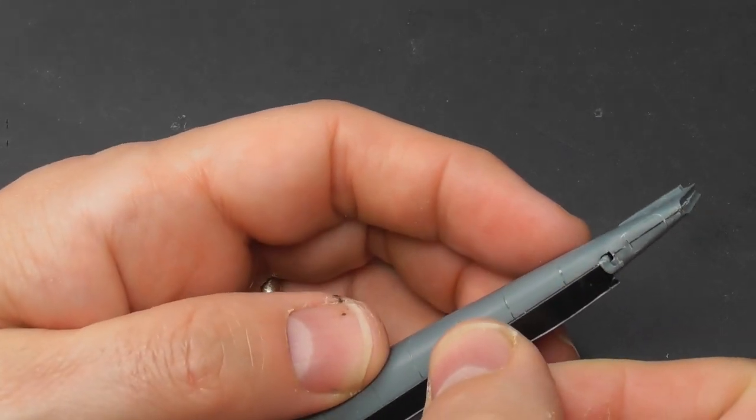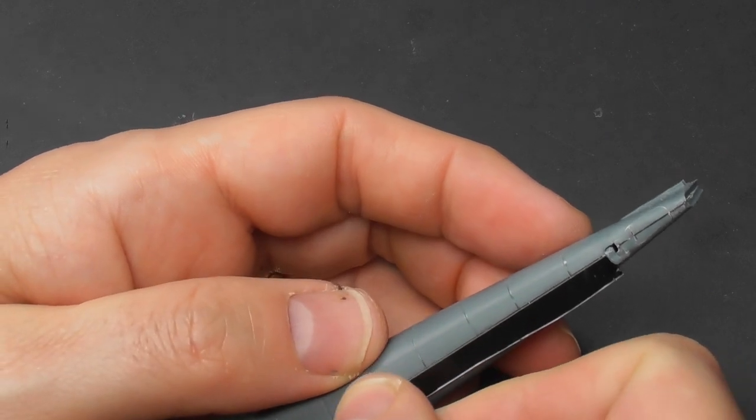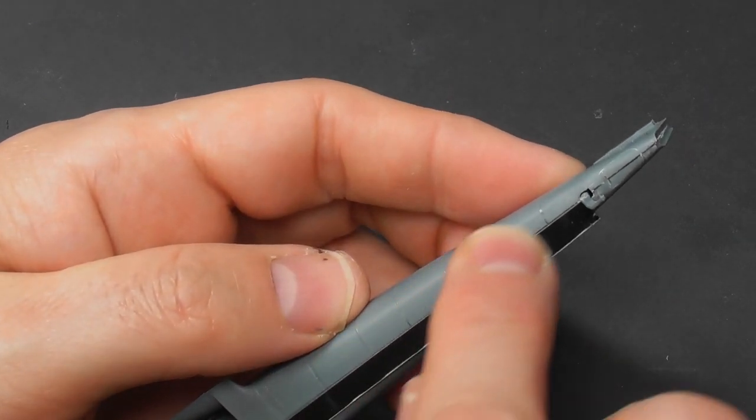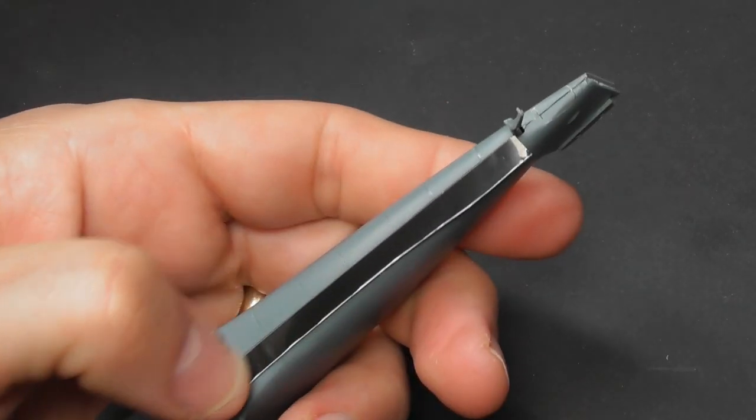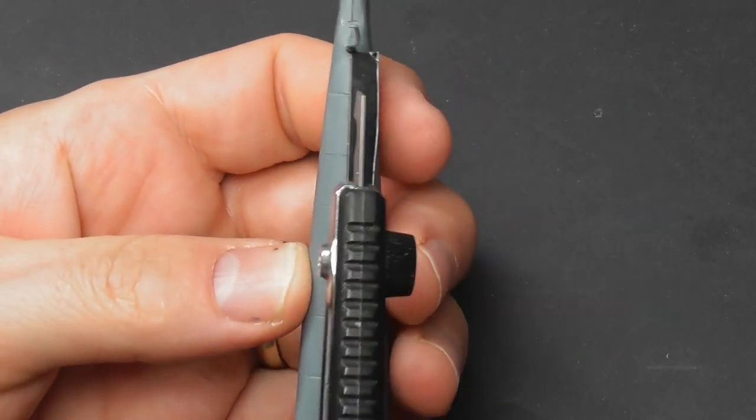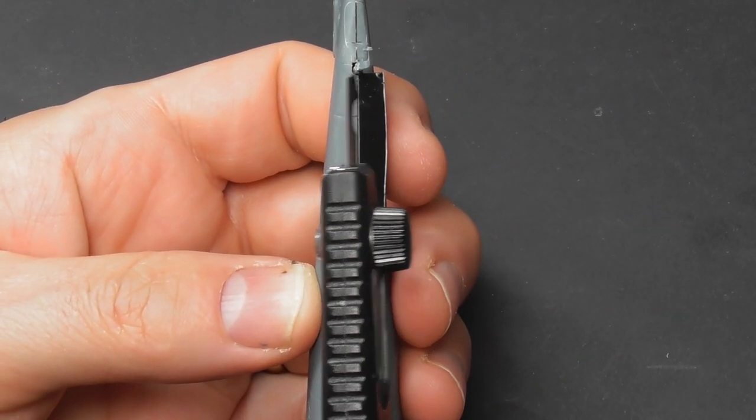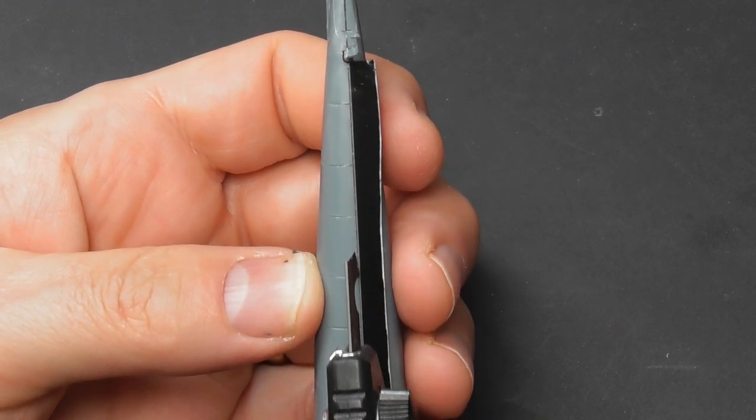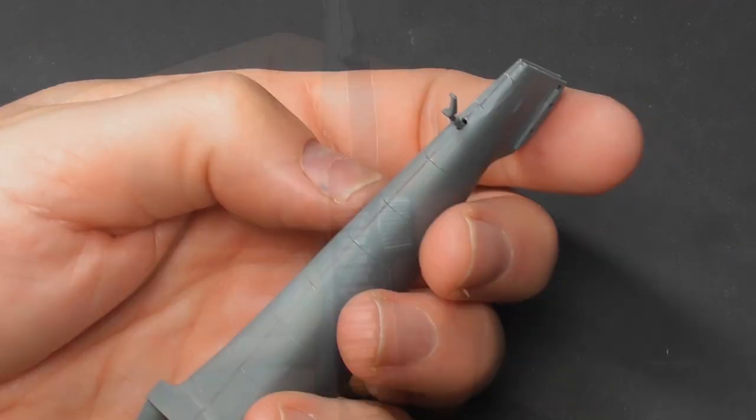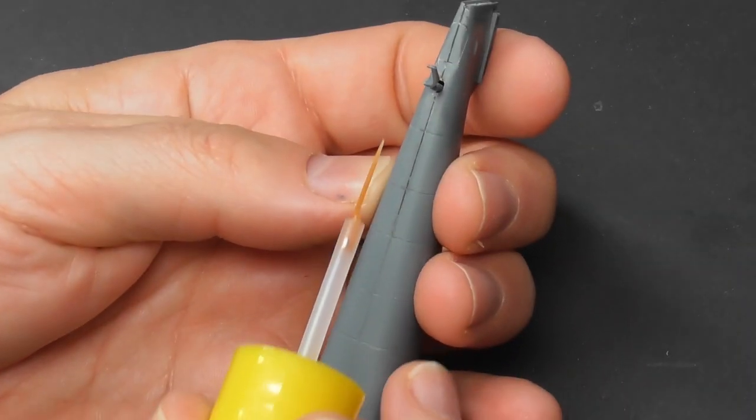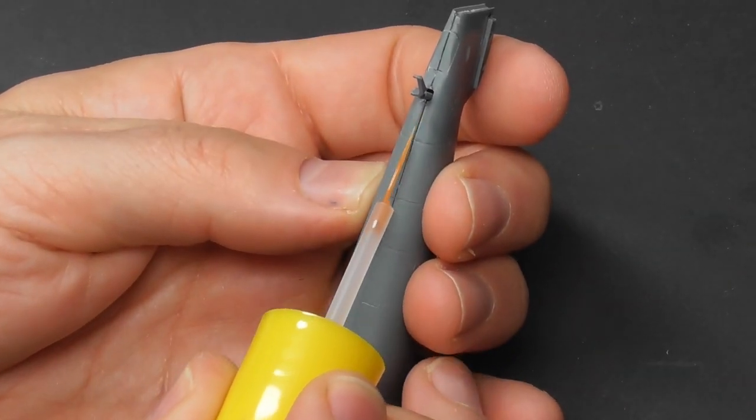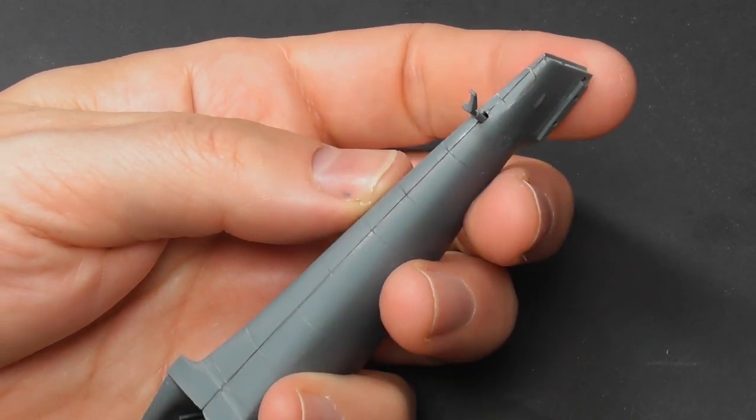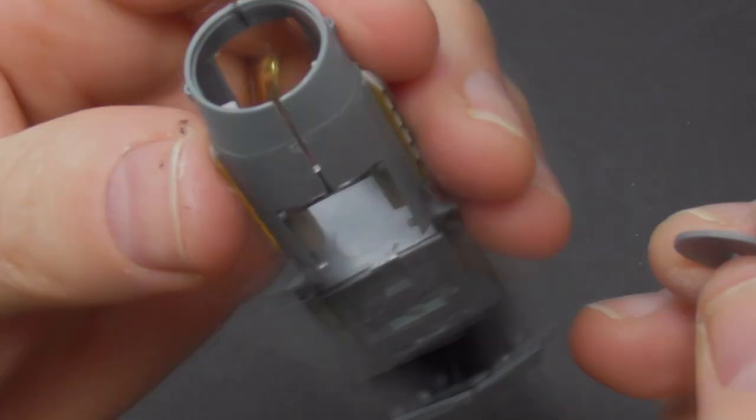For the scribing I use Dymo tape and I actually stick it to some masking tape and that way it keeps its stick for far longer than normal. Once in place it's just a simple job of running the scriber down. I'm not putting any weight on the scriber at all, just letting the weight of the tool do the work. Just a couple of passes is all that's needed and then running the cement down. That looks like all the other panel lines.